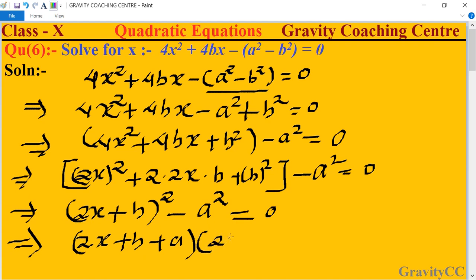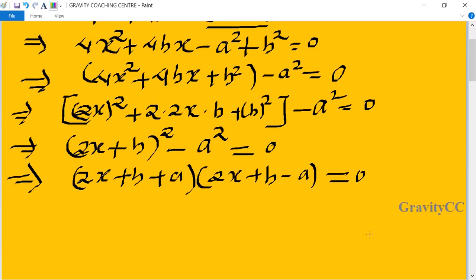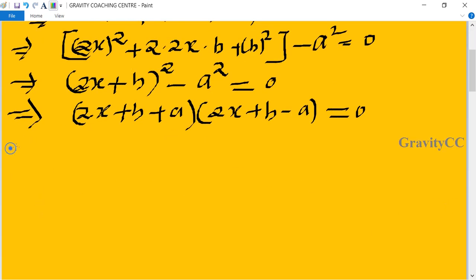And (2x + b - a) equal to zero, which implies that 2x + b + a = 0 or 2x + b - a = 0.